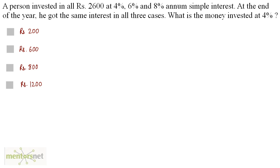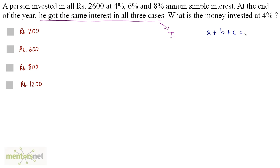A person invested in all Rs. 2,600 at 4%, 6%, and 8% per annum simple interest. At the end of the year he got the same interest in all three cases. What is the money invested at 4%? Let the money invested at 4%, 6%, and 8% be A, B, and C respectively. Since the total is 2,600: A plus B plus C equals 2,600.